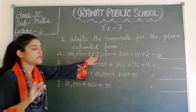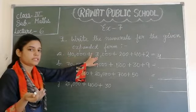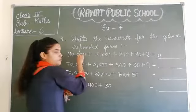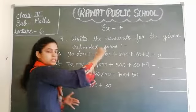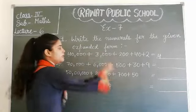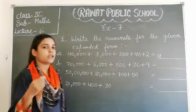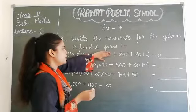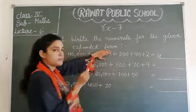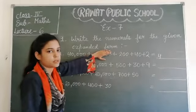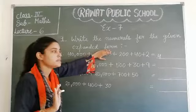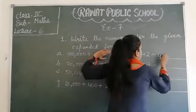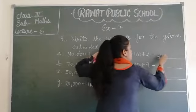Ab isme question me hami kya dekhna hota hai? Forty thousand se before agar one thousand wali digit ati hai. Forty thousand isse before kaunsi digit ati hai? One thousand wali. Agar ye ha pe one thousand wali digit na hokar direct hundred wali digit hoti. Yarni one thousand wali digit nahi hoti, toh hum ye ha pe kya lagaate? We will use zero.